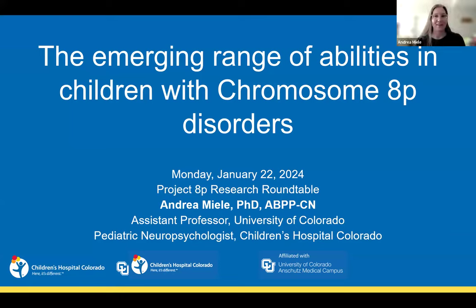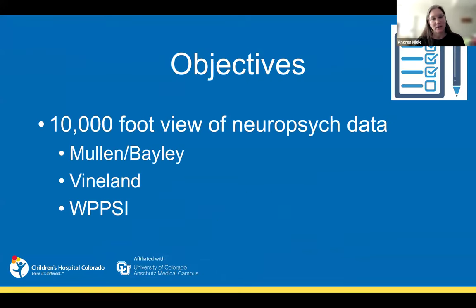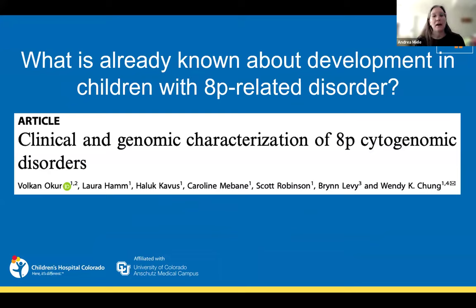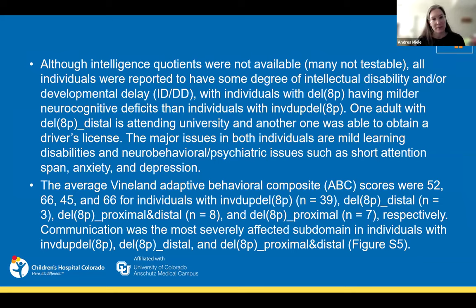I'm Andrea and I'll present the neuropsych testing data — how results from the testing I'm doing with kids we're seeing are starting to take shape. I'm going to give a 10,000-foot view from data specifically from the Mullen (with a couple Bayley scores), the Vineland, and the WPSI. Our fantastic special care physician Dr. Santucci put a paper in the chat that puts together a ton of genotype-to-phenotype information and actually discusses the Vineland. The paper notes 'although intelligence quotients were not available, many not testable' — and I want to address that. It's true you can't always get a gold-standard IQ score, but it doesn't mean the kids are not testable. Every child can show me something they can do.